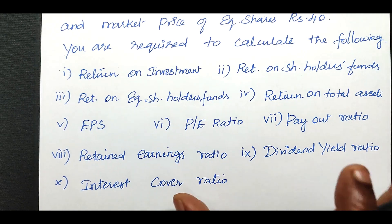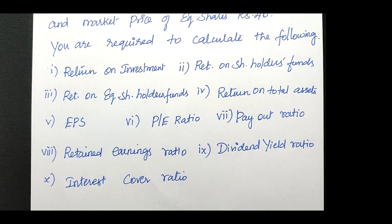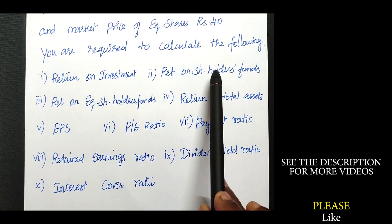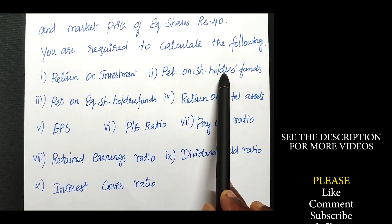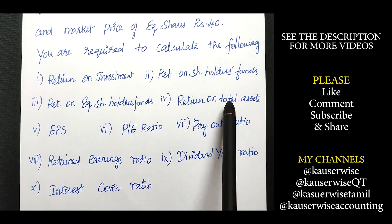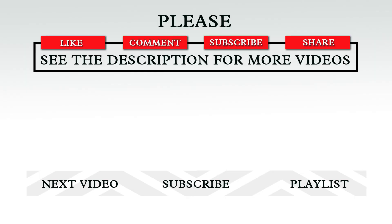So far we have calculated 4 ratios: return on investment, return on shareholders fund, return on equity shareholders fund, and return on total assets. The remaining ratios will be discussed in the next video — you can find the playlist link in the description box. Hope you understand this concept. Please hit like, comment, subscribe, and share with your friends. Thank you.